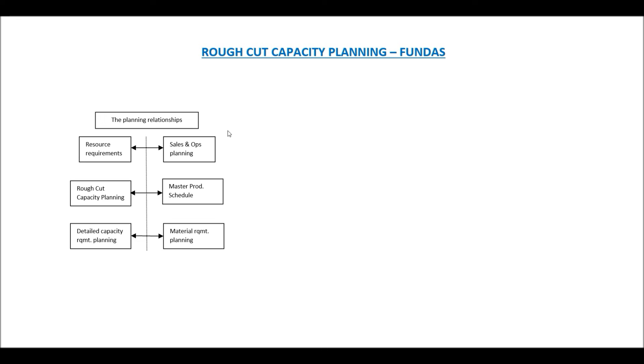We saw the basic fundamentals of rough cut capacity planning. In terms of the overall production planning process, sales and operations planning sits at the highest level with high-level resource requirement planning. Then we have the MPS with rough cut capacity planning, as covered in this video. When material requirement planning is done, detailed capacity requirement planning — also known as CRP — is performed. These are the various planning relationships that will be covered in different videos on this topic.